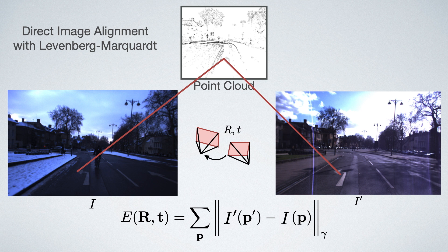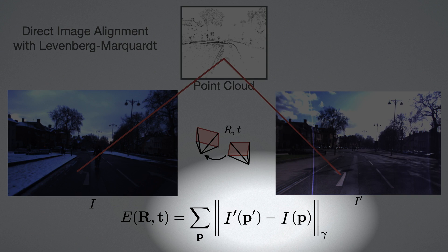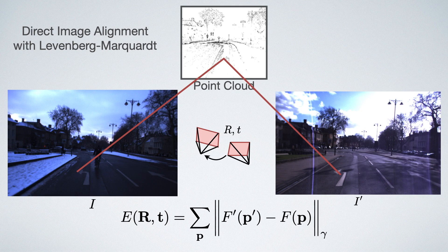To make this work for images with strong lighting changes, we replace the images with multi-channel features created by our neural network.